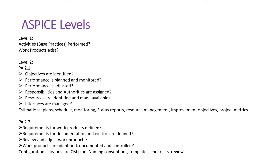In Level 1, we already have a set of base practices we are doing and a set of work products as outcomes. Now at Level 2 we need to set an objective — a goal value for that particular activity. Whether those goals and objectives are defined is the first thing. Then we need to monitor and view the performance of that particular process or activity, and adjust it accordingly. We also need to define roles and responsibilities and identify interfaces.